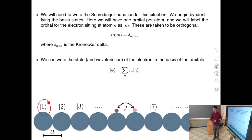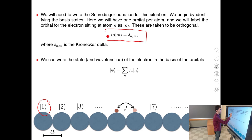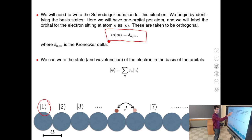This is an important picture to have in mind: you imagine hopping of an electron from one orthogonal orbital to the next. They form an orthogonal set, expressed by the bracket equation: the matrix element between the nth and mth orbital equals 1 when n equals m, and zero otherwise — a Kronecker delta.